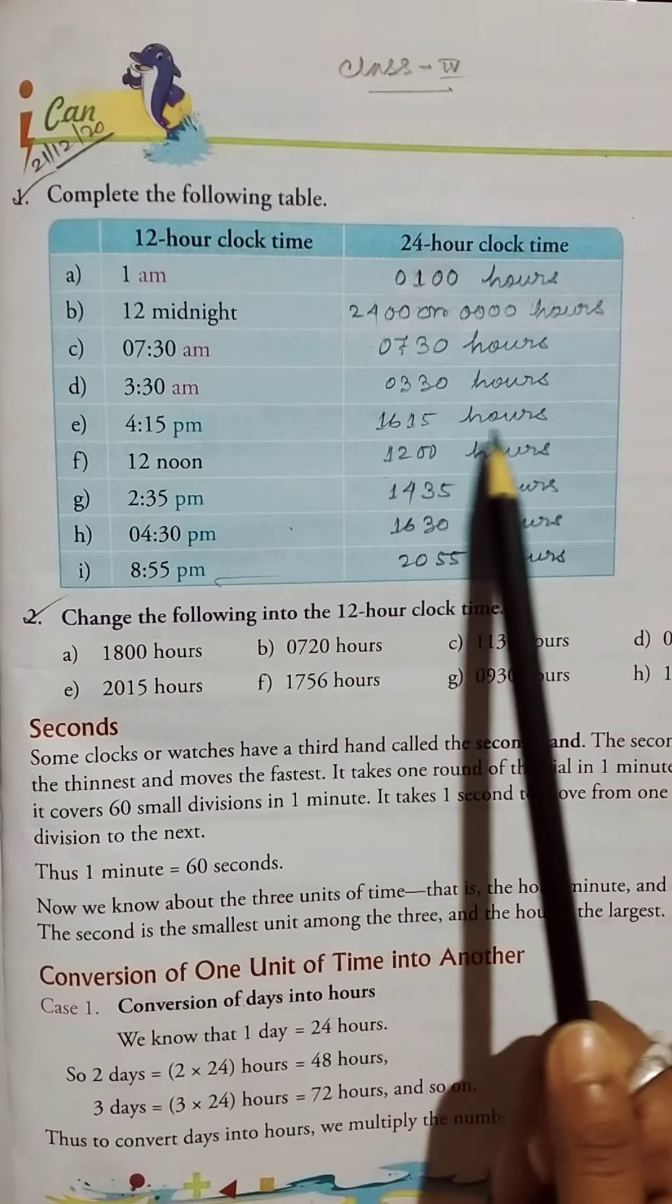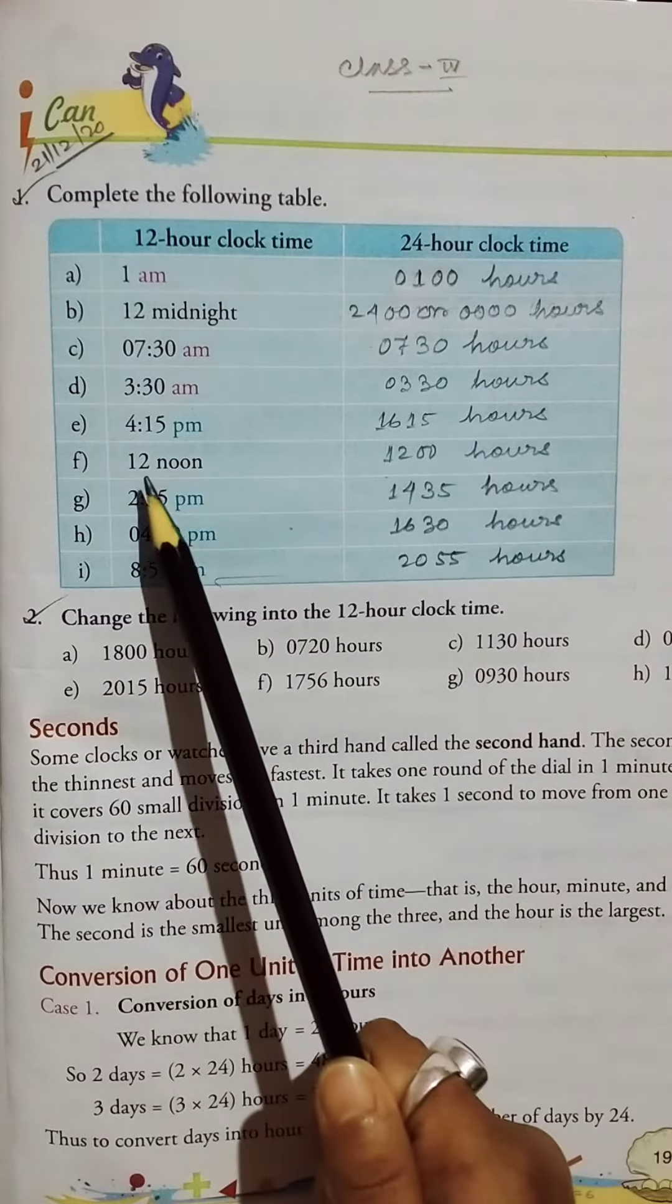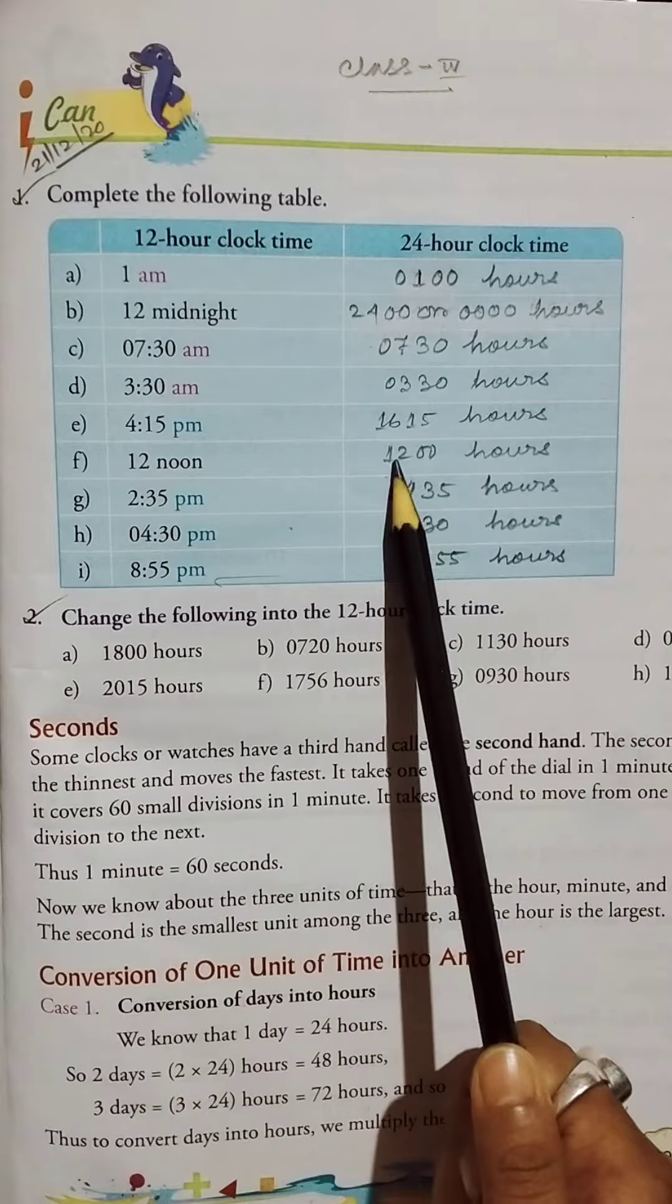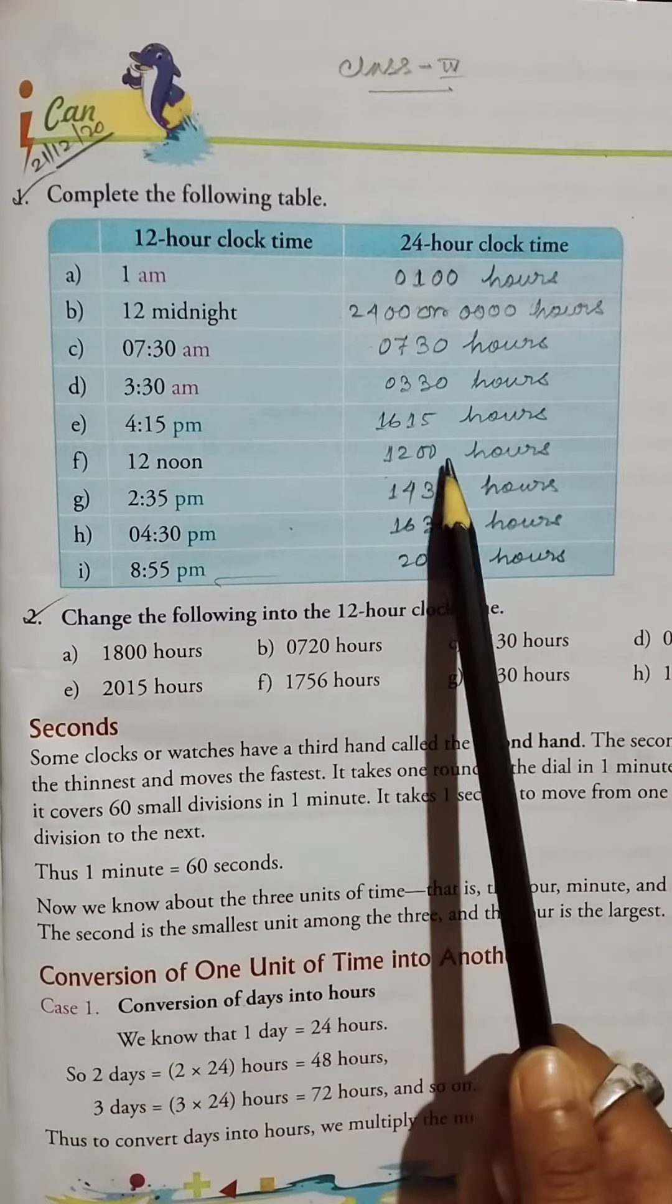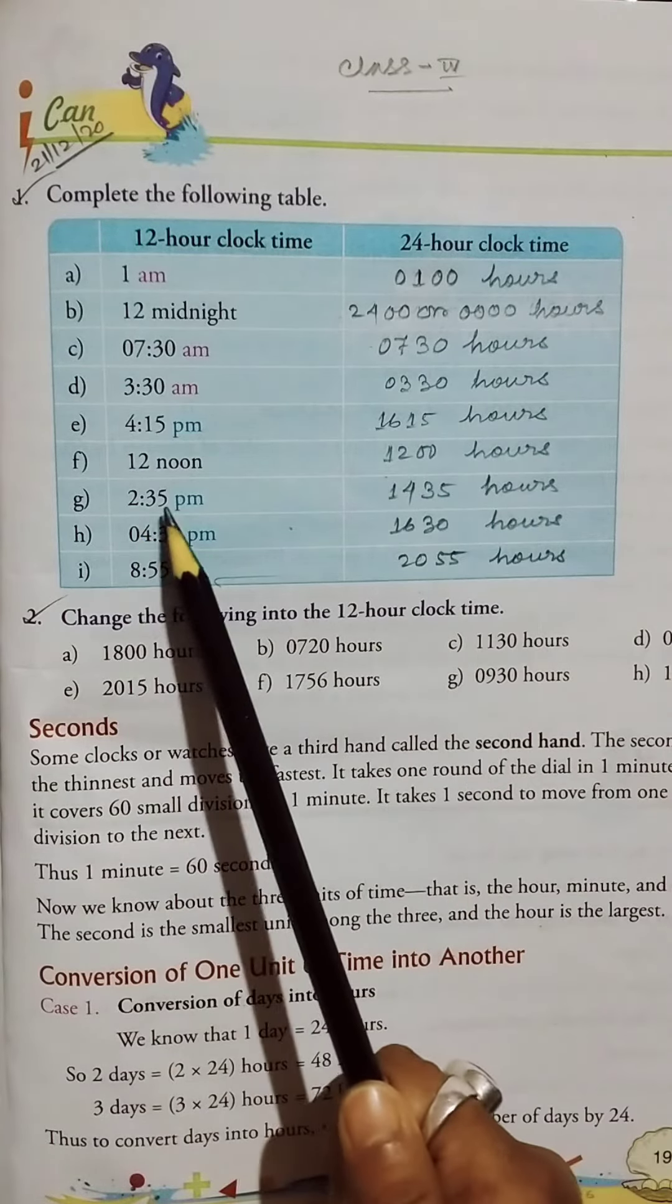So 1615 hours. Okay, then 12 noon, so 1200 hours. Okay, 1200 hours. And then 2:35 p.m.